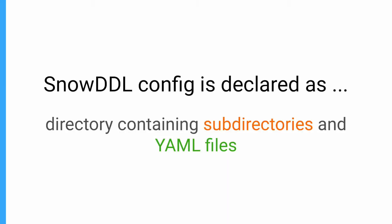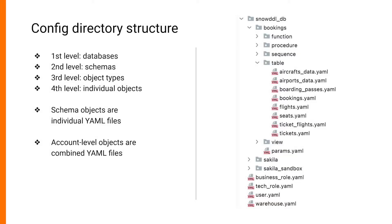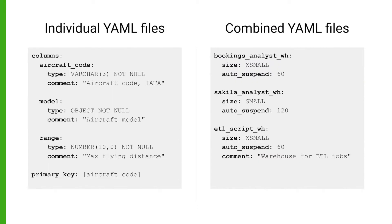Snow DDL is a declarative style tool whose config is declared as a directory containing subdirectories and YAML files. This is how it looks in practice, and this is how the contents of individual YAML files look like.